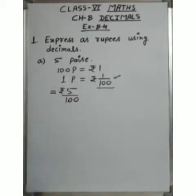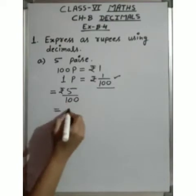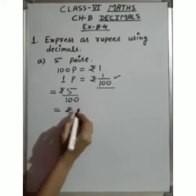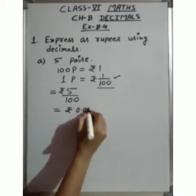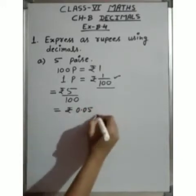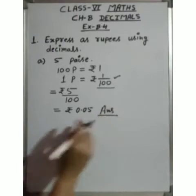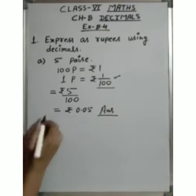So for 5 paise, we write Rupees 5 upon 100. What is 5 upon 100? There are two zeros, so we write 0.05 — the decimal point comes 2 numbers from the right. So our answer in decimal form is Rupees 0.05.